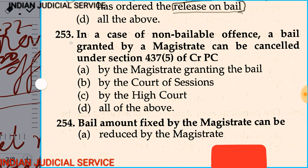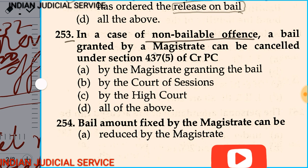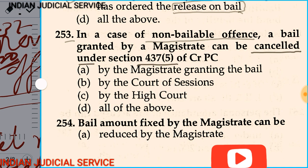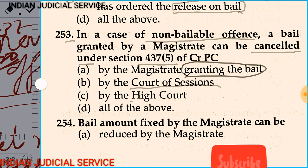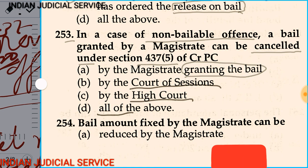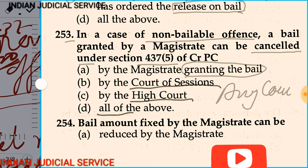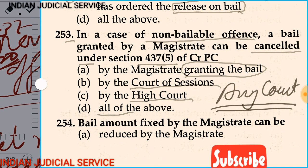Question number 253: In a non-bailable offence, the bail granted by a magistrate can be cancelled under section 437(5) of CrPC by — option A: the magistrate granting the bail, option B: court of session, option C: high court, option D: all of the above. The word used under section 437 sub-section 5 is 'any court,' including high court, session court, and the magistrate who granted bail. The answer is option D.